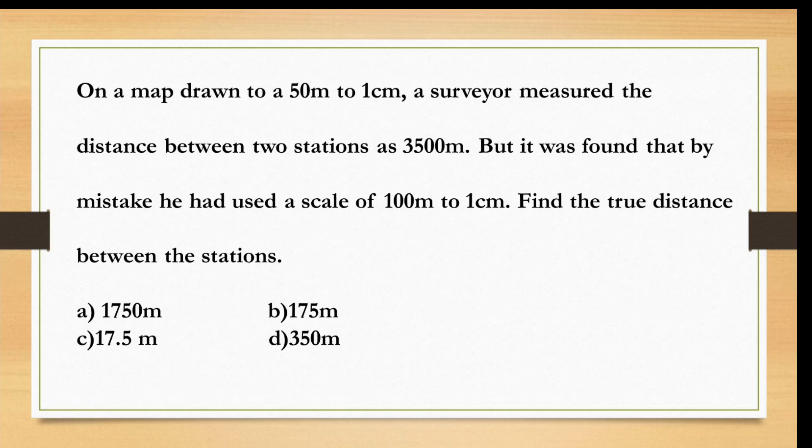On a map drawn to a 50m to 1cm, a surveyor measured the distance between two stations as 3500m. But it was found that by mistake, he had used a scale of 100m to 1cm. Find the true distance between the stations.